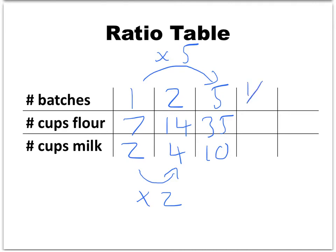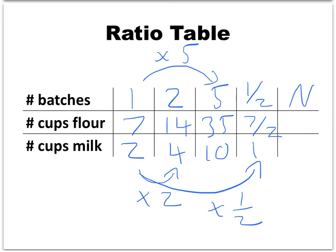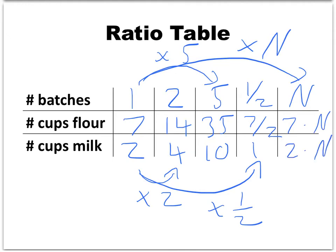Now suppose we wanted to make just a half of a batch. We would multiply by one half: 7 times one half is 7 halves, or 3.5, and 2 times one half is 1. So for a half batch, we'd need 3.5 cups of flour and 1 cup of milk. In general, if we wanted to make n batches, we multiply by n, giving us 7n cups of flour and 2n cups of milk. From one column to another in a ratio table, we always multiply by some number.